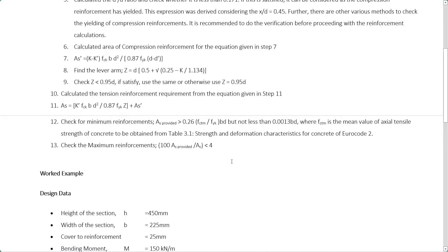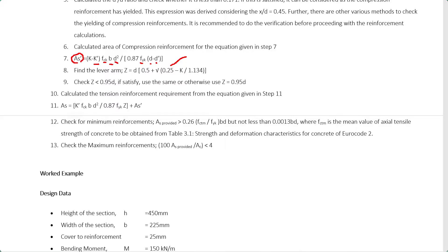Next, you have to calculate the compression reinforcement area using the given equation. You can substitute the known parameters: K from your calculation, K' = 0.167, FCK is the cylinder strength, B is beam width, D is effective depth, FYK is the characteristic yield strength of the reinforcement, and D' is the depth to the compression reinforcement bar. From this equation, you can calculate the compression reinforcement area.